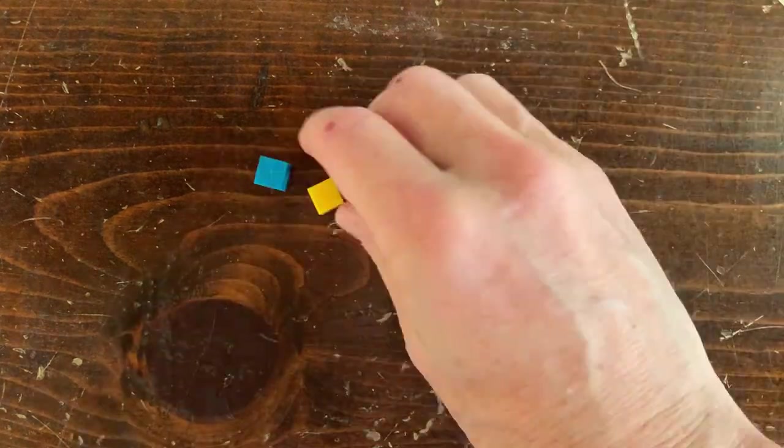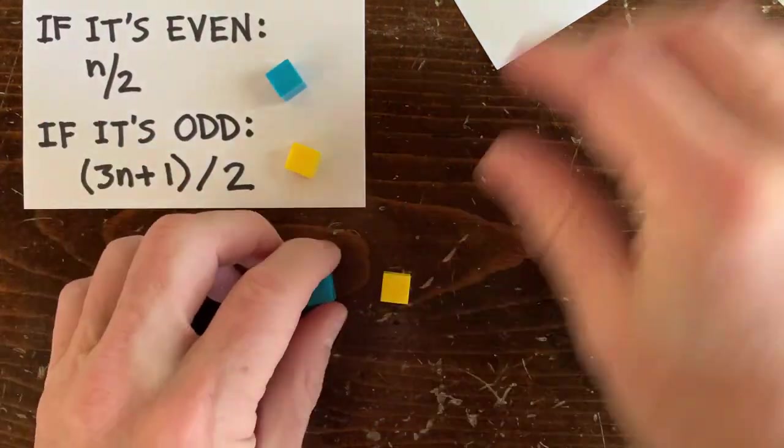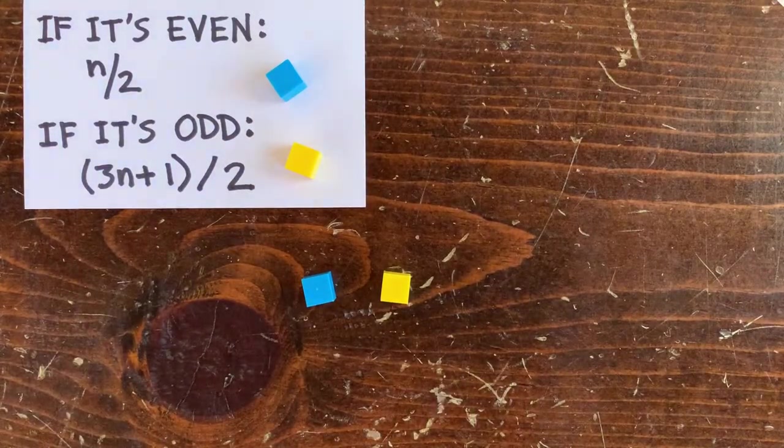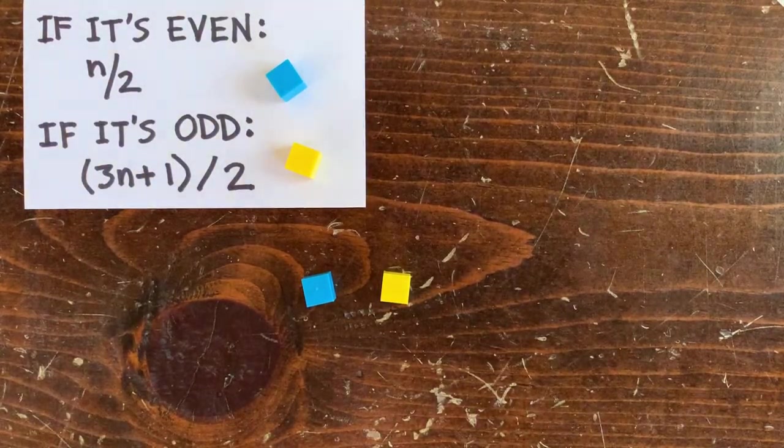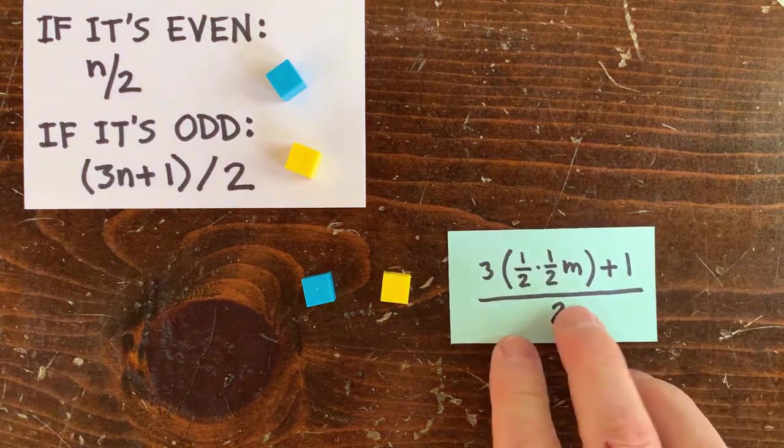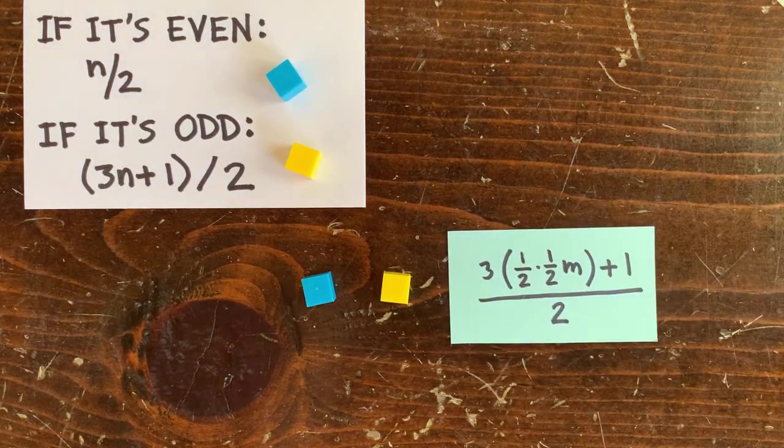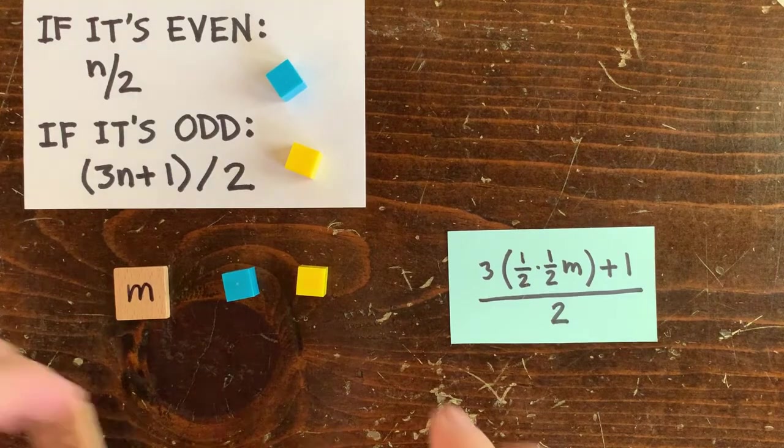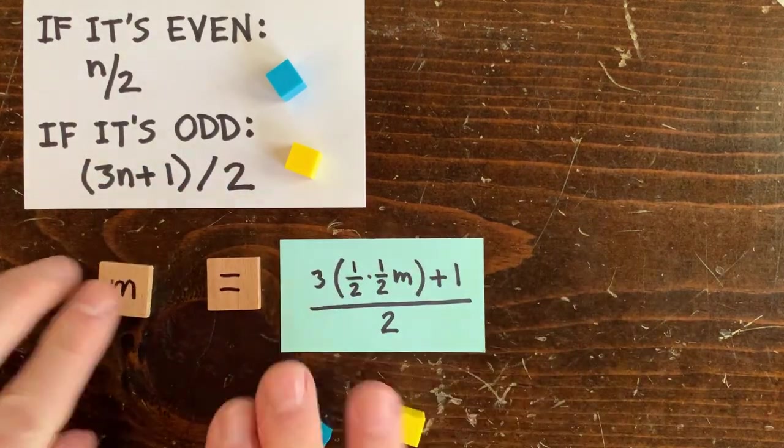First take a half, then multiply the result by 3, add 1, and divide by 2. We want to know which number makes a loop, so we solve for m equals that. It's easy 8th grade math, and we get m equals 2.